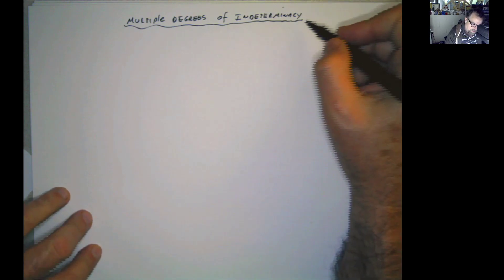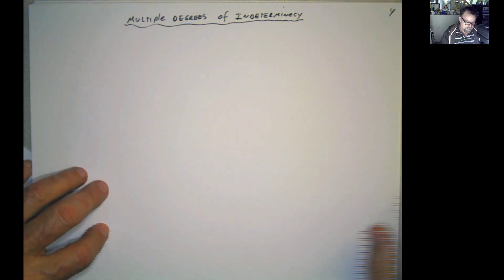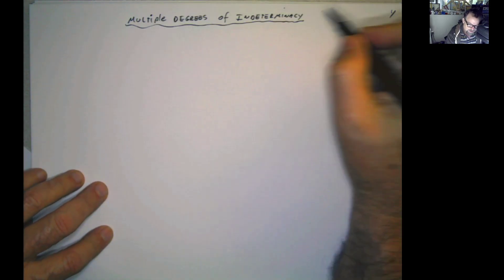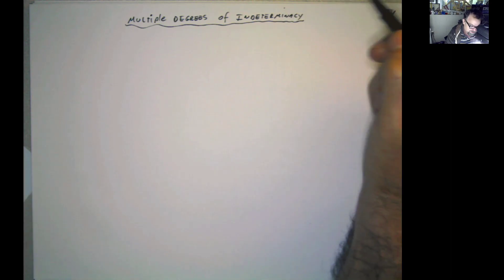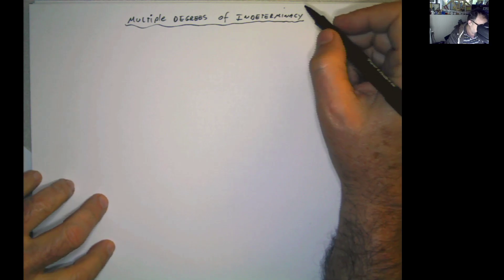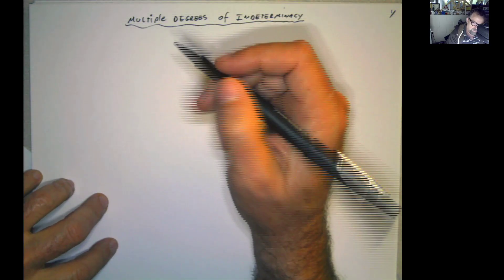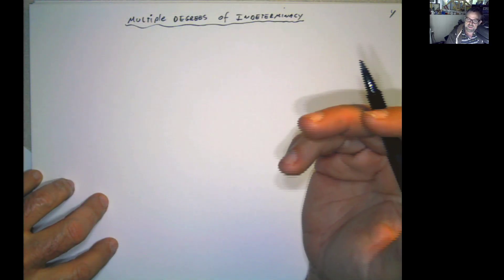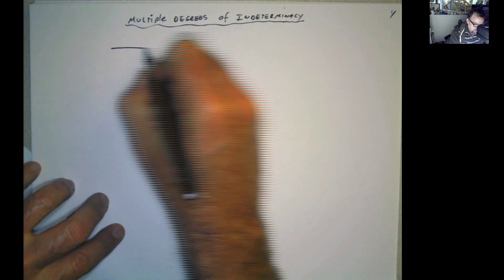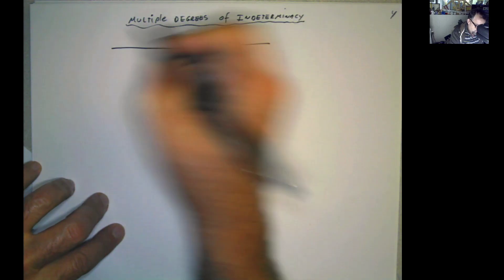Hey guys. So until now, we have been only working with one degree of indeterminacy, and we have used the method of consistent deformation for that. When you have more than one degree of indeterminacy, the work becomes a lot. But I want to show you, at least, the concept of how to do that if you need to use this method.